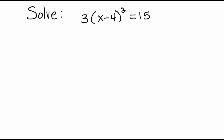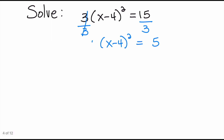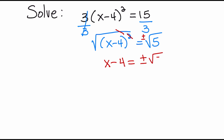Let's take a look at one final problem: solve 3 times the quantity x minus 4 squared equals 15. Again, we're solving this quadratic equation using the square root property. We need to isolate the x minus 4 squared term, so the first thing we do is divide both sides by 3. That leaves x minus 4 squared is equal to positive 5. Now that x minus 4 squared is isolated, I can take the square root of both sides. On the left the square root and the square cancel, and on the right I put plus or minus. So I end up with x minus 4 equals plus or minus the square root of 5.